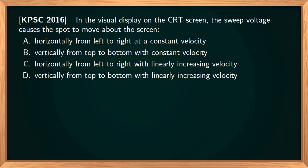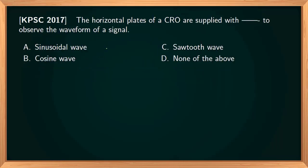In a visual display on a CRT, the sweep voltage causes the spot to move across the screen horizontally from left to right at a constant velocity. In a CRO, the horizontal plates are supplied with a sawtooth waveform, also called the time-base or sweep voltage, to observe the waveform of a signal.